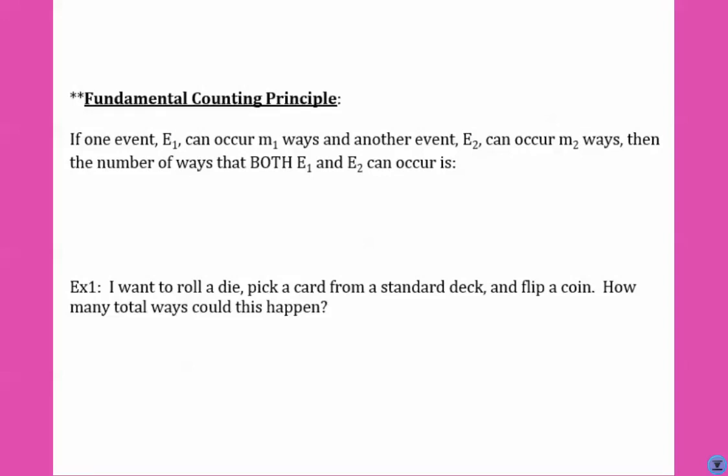If one event, which we're going to say is E sub 1, can occur M1 ways, and the other event, E2, can occur M2 ways, then they can occur together M1 times M2 ways.